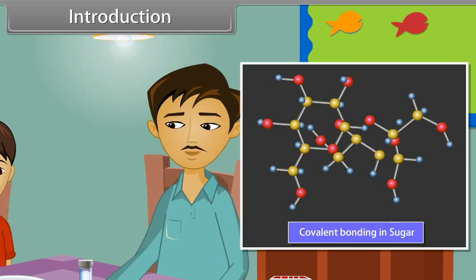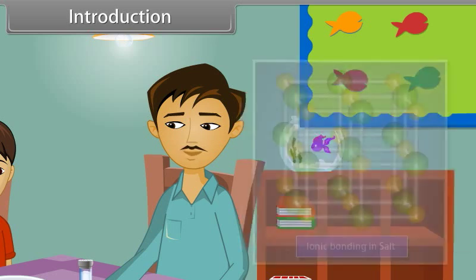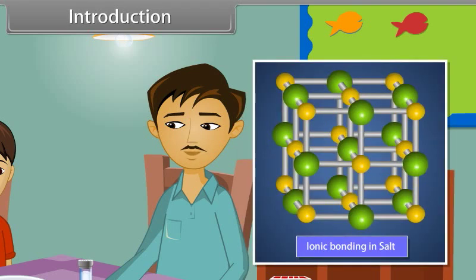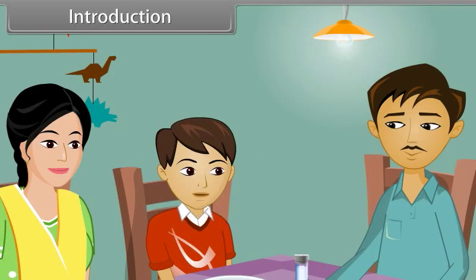In sugar, there is covalent bonding in the molecules, whereas in salt, there is ionic bonding in the molecules. I got the reason and I want to know some more about that. Students, today we will study more about chemical bonding and molecular structure.